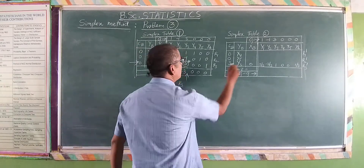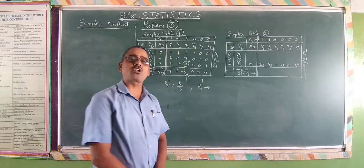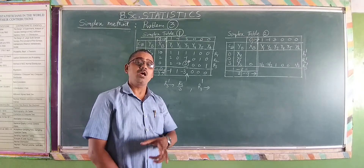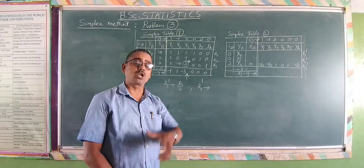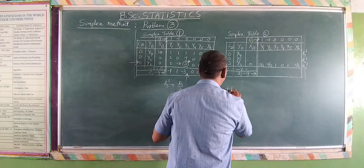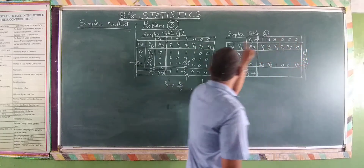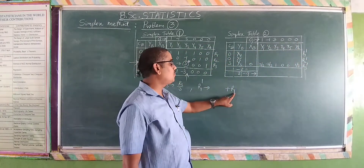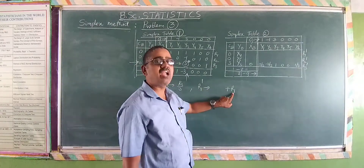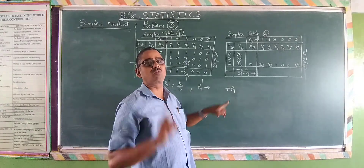The next operation is r1 dash. For r1 dash, you always start with plus r1 from the previous simplex table — never minus r1. You obtain r1 dash from r1, always plus r1.